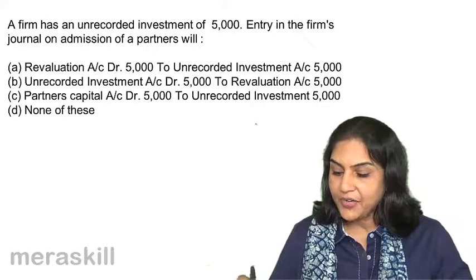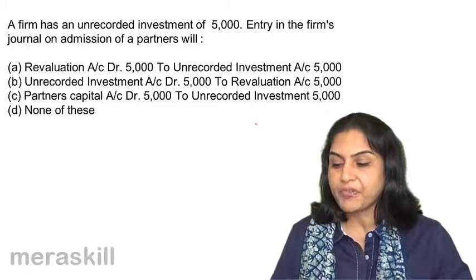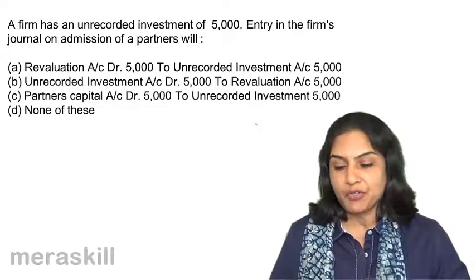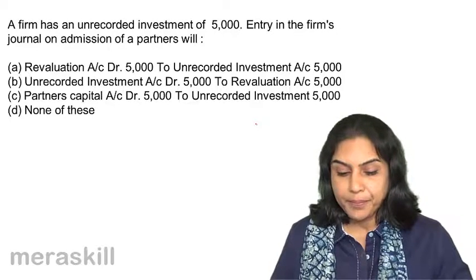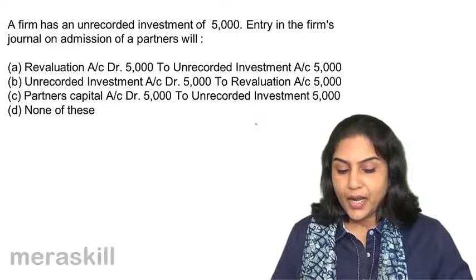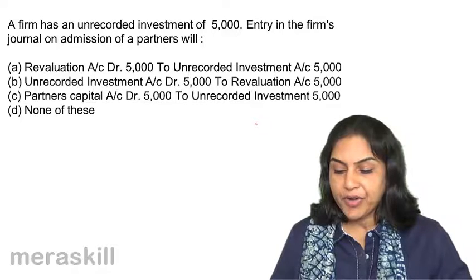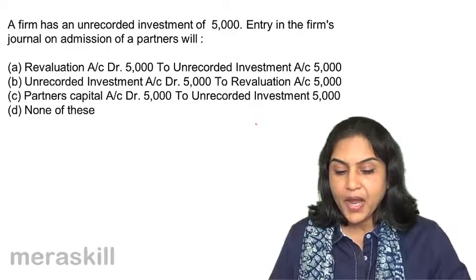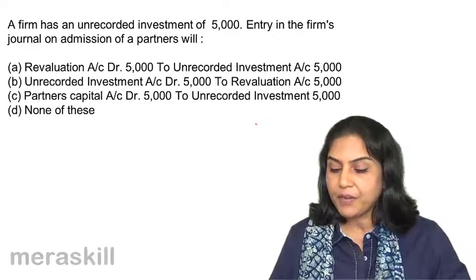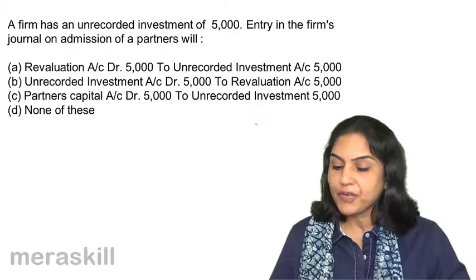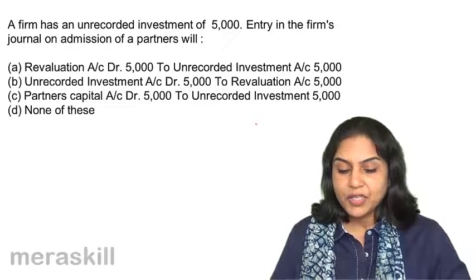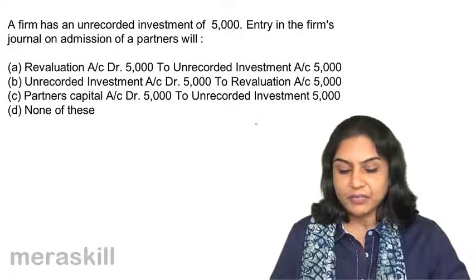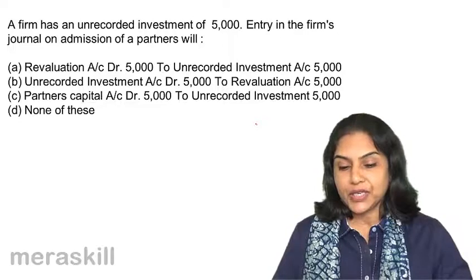A firm has an unrecorded investment of 5000. Entry in the firm's journal on admission of a partner will be: A. Revaluation account debit 5000 to unrecorded investment 5000. B. Unrecorded investment account debit 5000 to revaluation account 5000. C. Partners capital account debit 5000 to unrecorded investment account. And D. None of these.